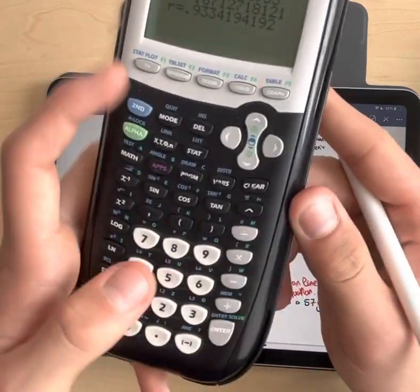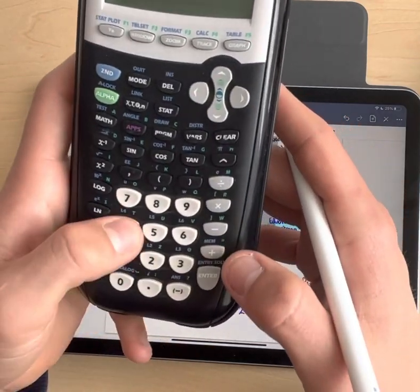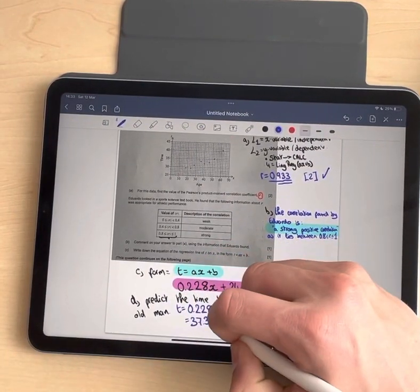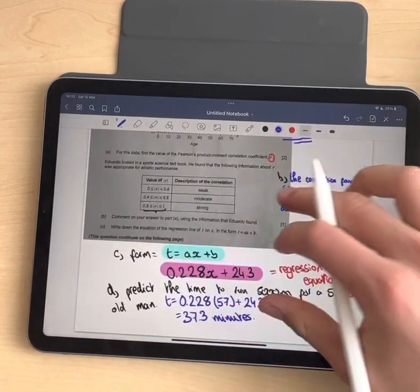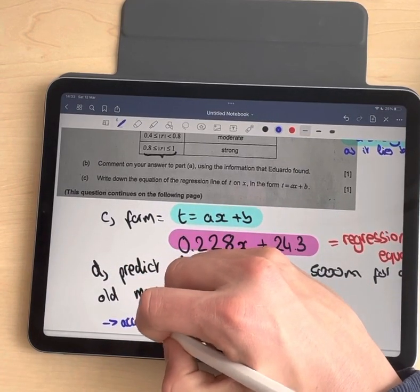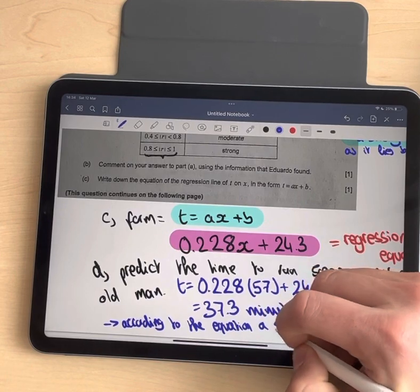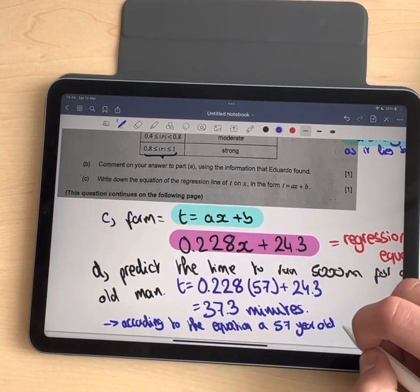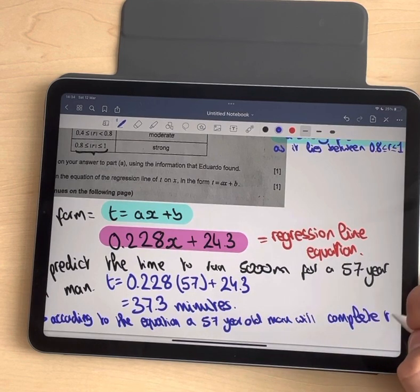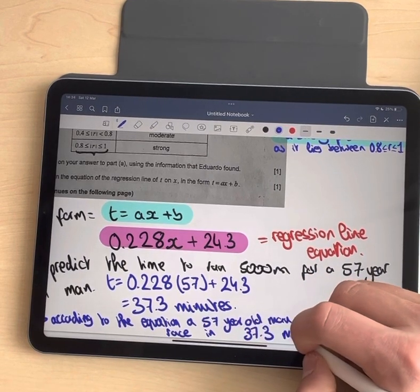You do this in your calculator. So you quit and you write 0.228 times 57 plus 24.3. 37.3 minutes. And now you want to go here and we write: according to the equation, a 57-year-old man will complete the race in 37.3 minutes. And this will award you full marks.